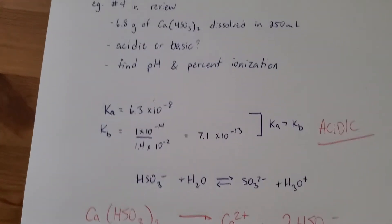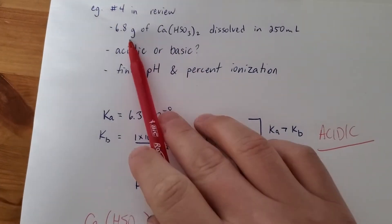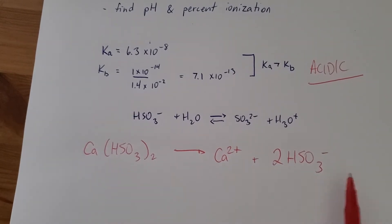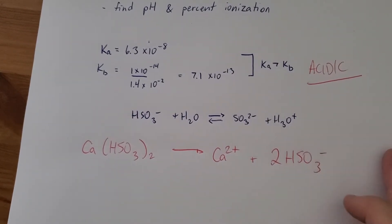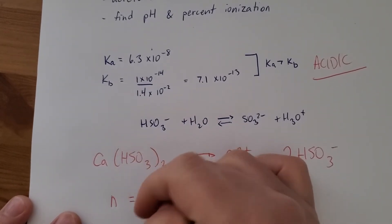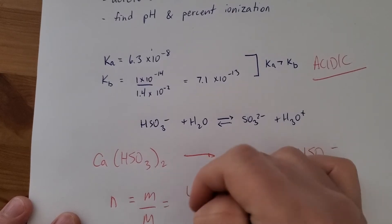So with the mass of calcium hydrogen sulfite, we can find this concentration, but the HSO3- concentration will be double. So let's go ahead and find the number of moles of calcium hydrogen sulfite. We have 6.8 grams.